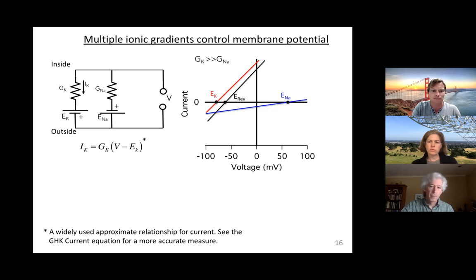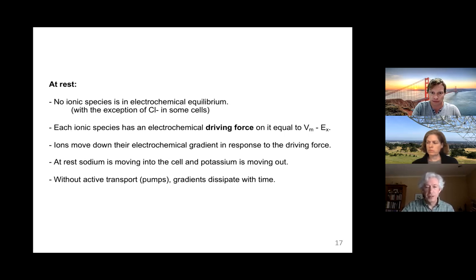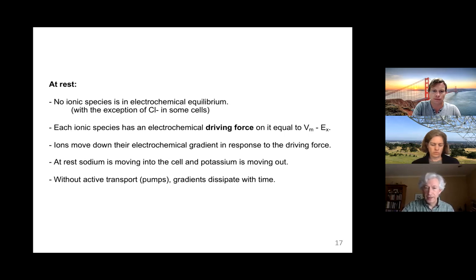At rest, no ionic species is in electrochemical equilibrium, except chloride in some cells, which is distributed passively. Each ion has a driving force that tends to push the cell towards its equilibrium potential. Ions move down their electrochemical gradient in response to this driving force. At rest, sodium moves into the cell and potassium moves out. The gradients are maintained with pumps and would dissipate over time without energy, because the pumps use energy.